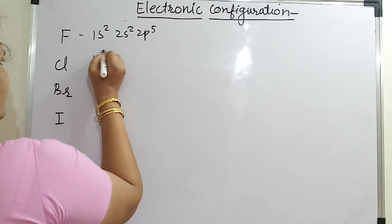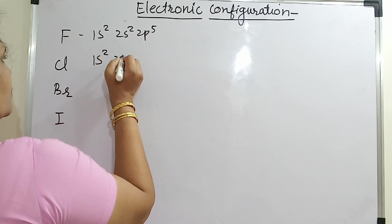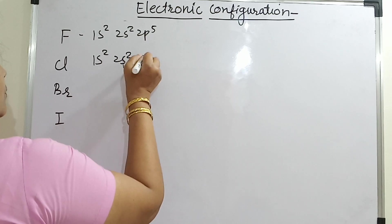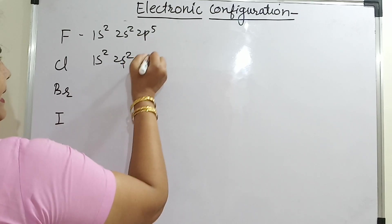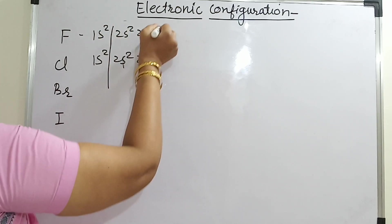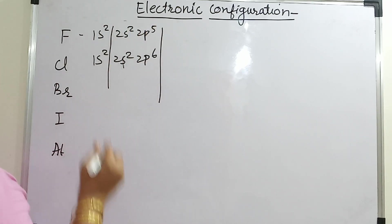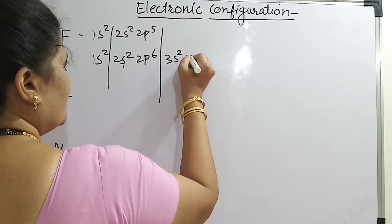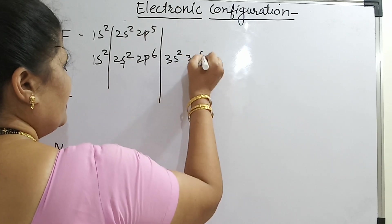For chlorine: 1s2, 2s2, 2p6 — now I will completely fill this — so it will be 3s2 and 3p5.